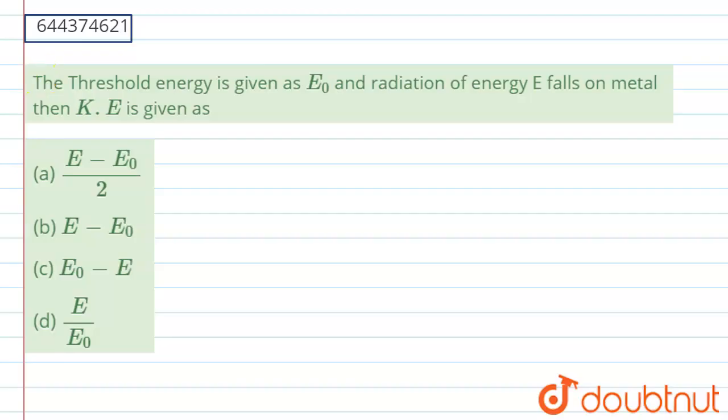Hello everyone, so in this question, it is given that threshold energy is given as E₀ and the radiation of energy E falls on the metal, then kinetic energy, that is KE, is given as.